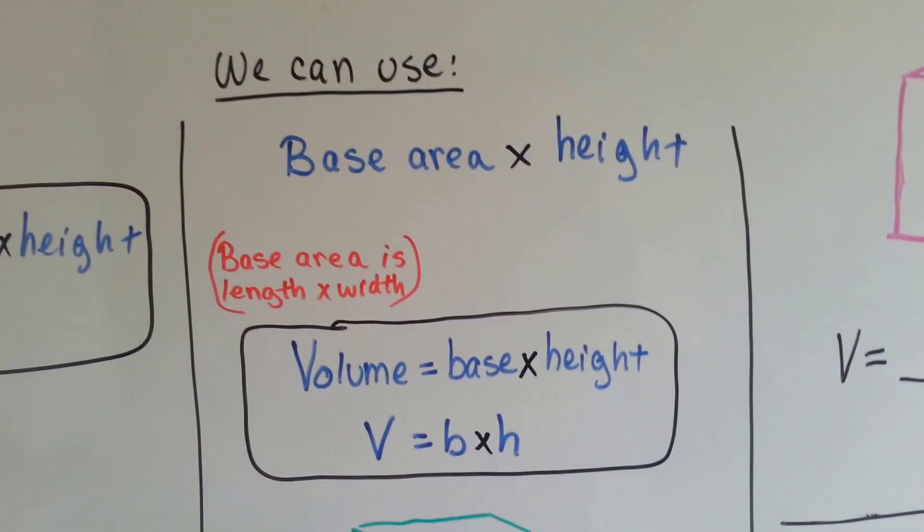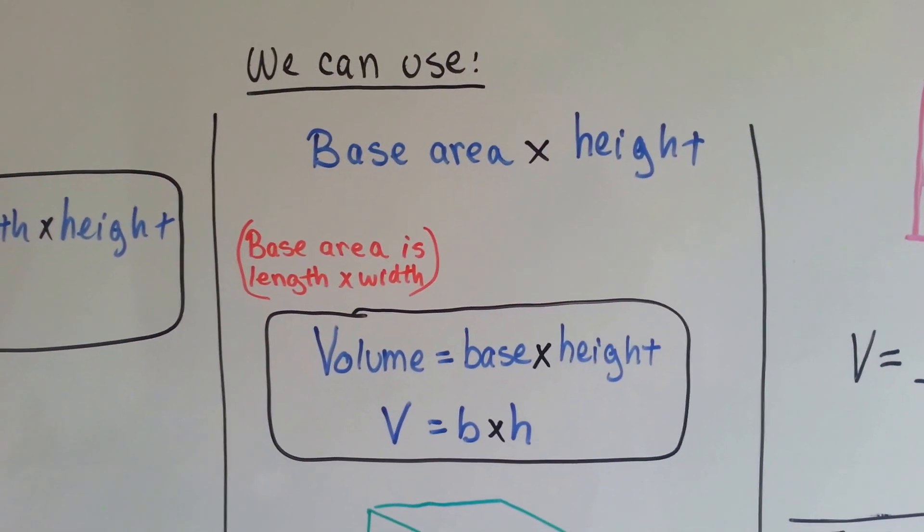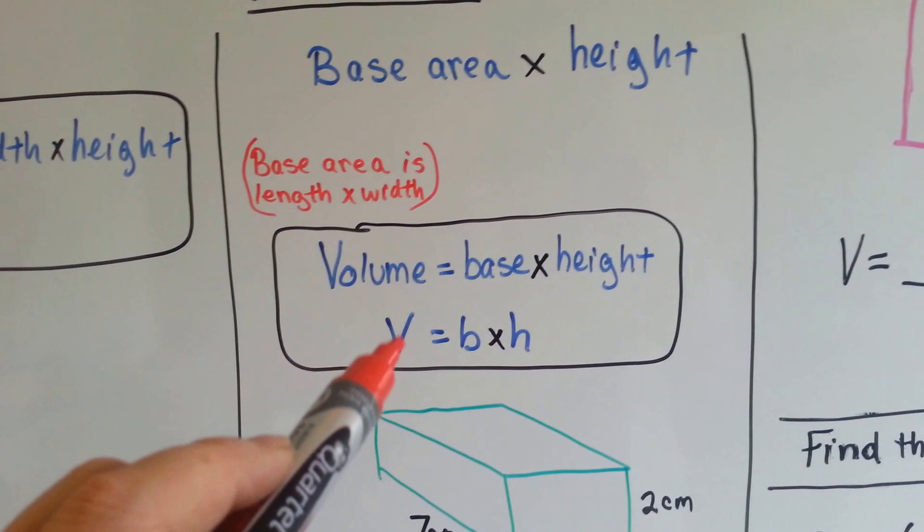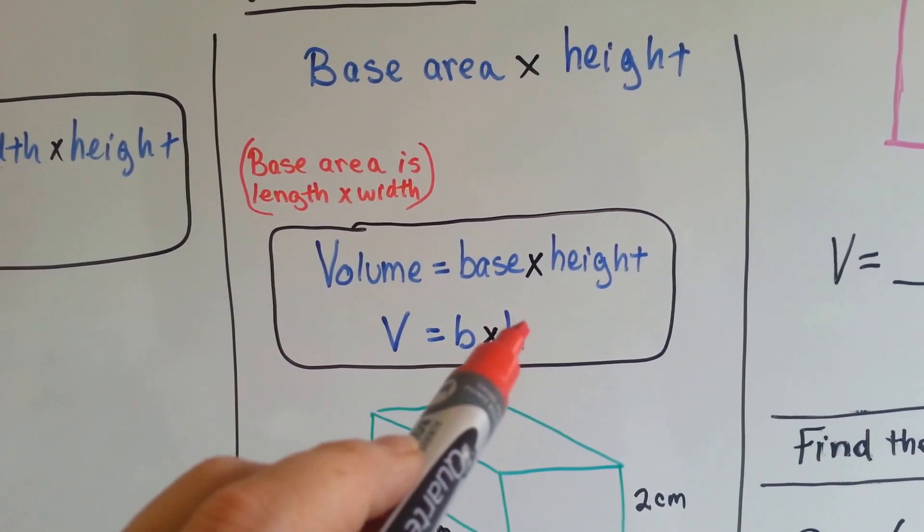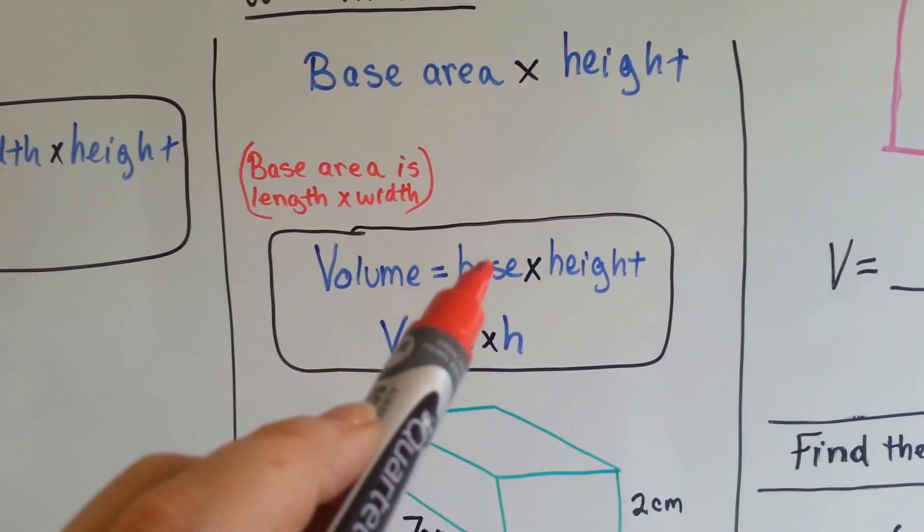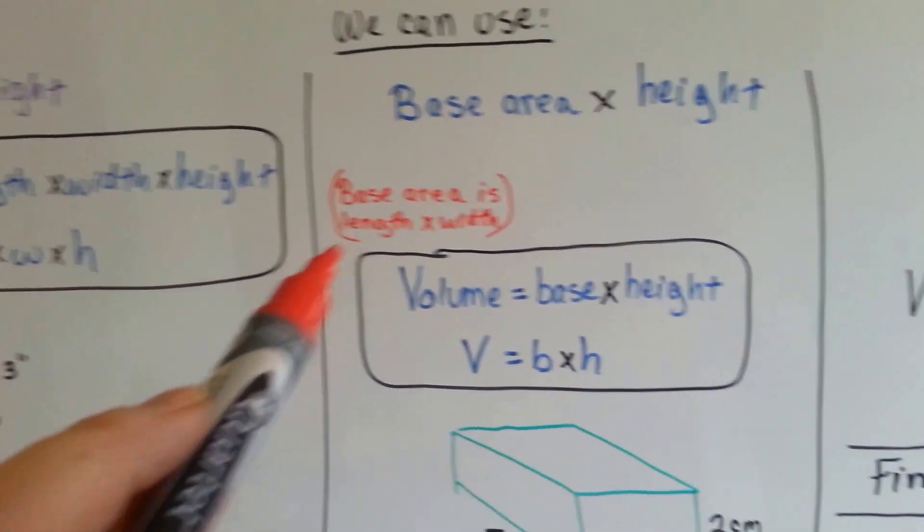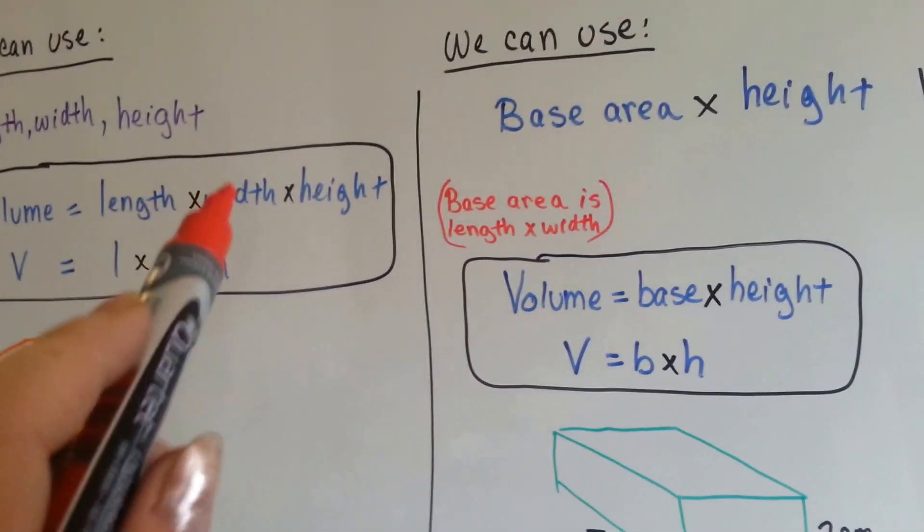We could also use the base area and the height to find the volume. A volume formula is also V equals B times H. Volume equals base times height. And the base area is the length times the width. So it's almost like the first part of it's done.